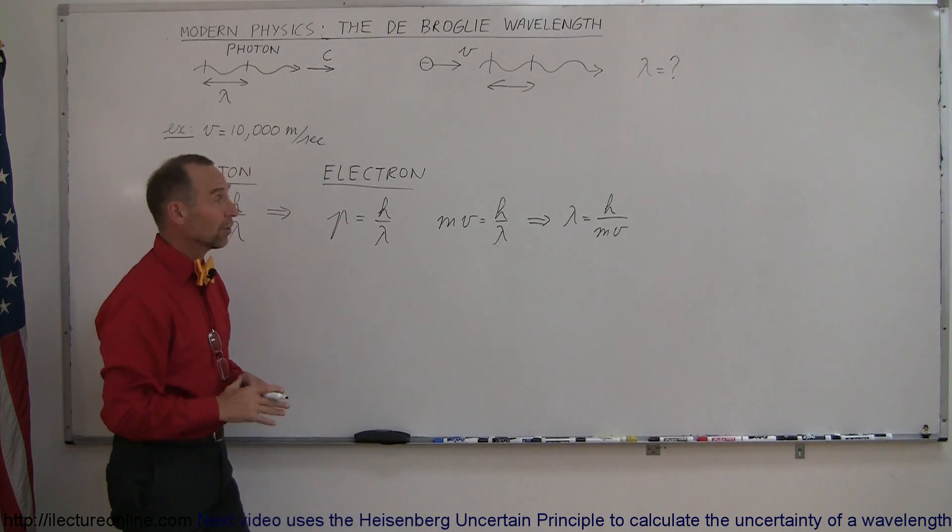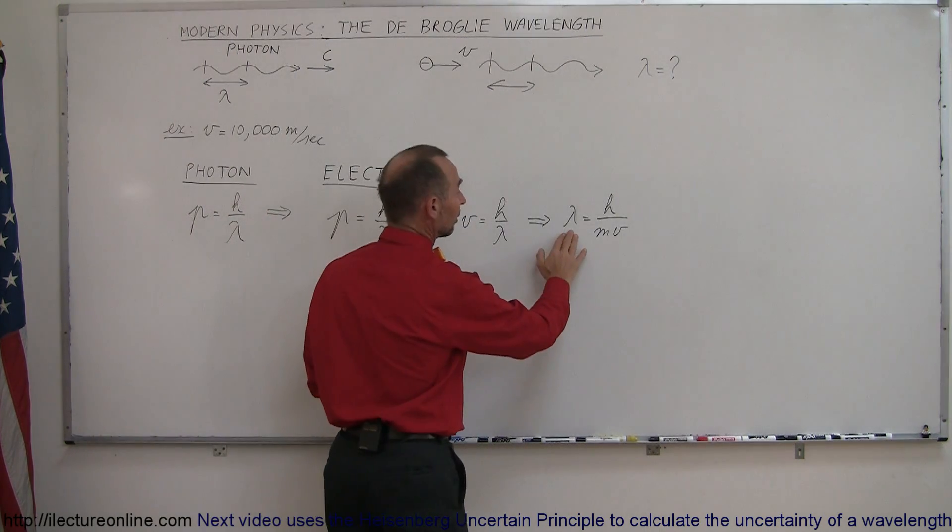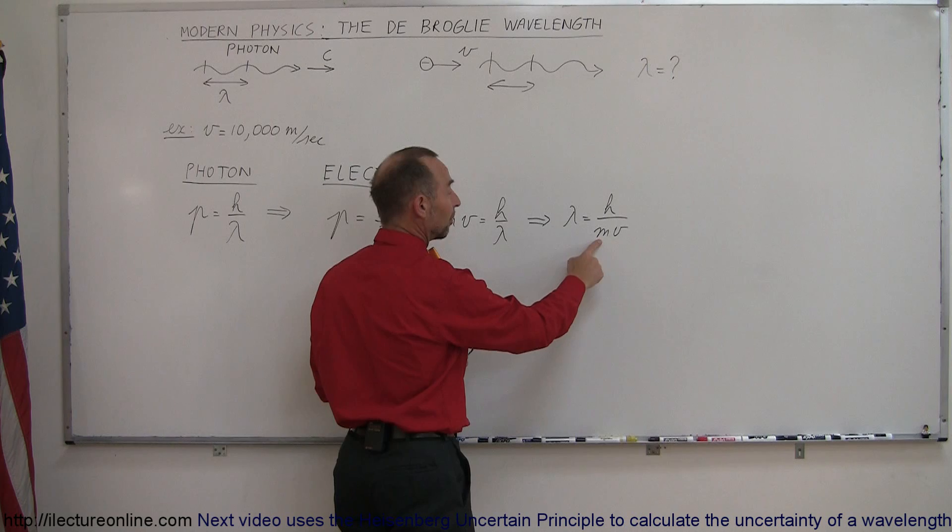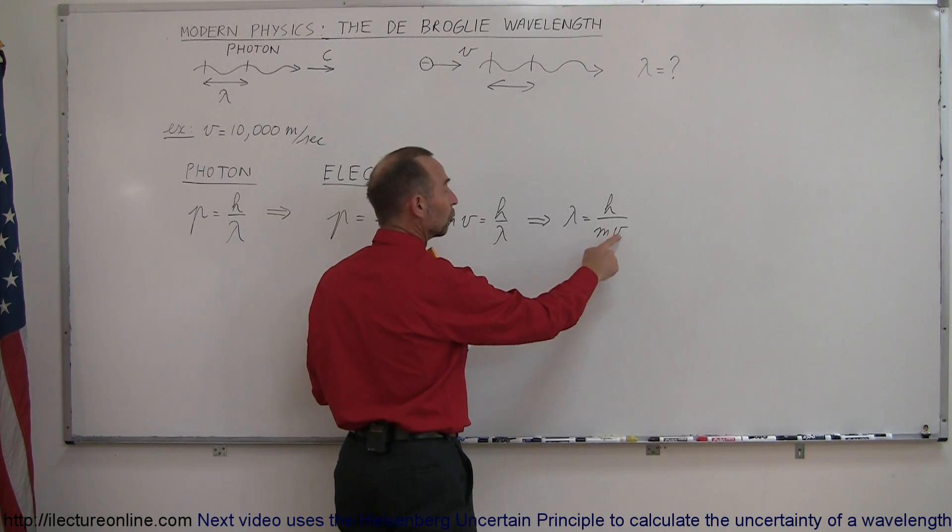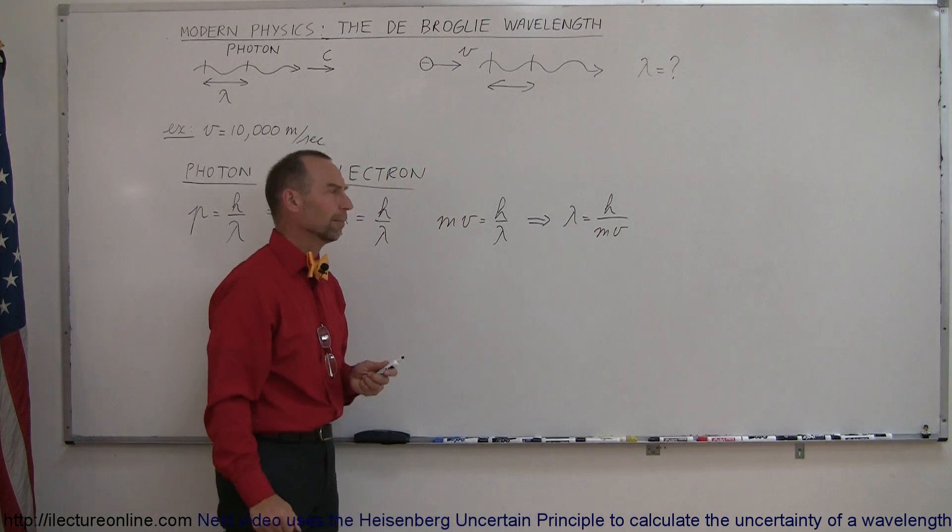So what we're saying here is that the wavelength of any particle is inversely proportional to the mass of the particle and inversely proportional to the velocity, and of course we still have Planck's constant there.